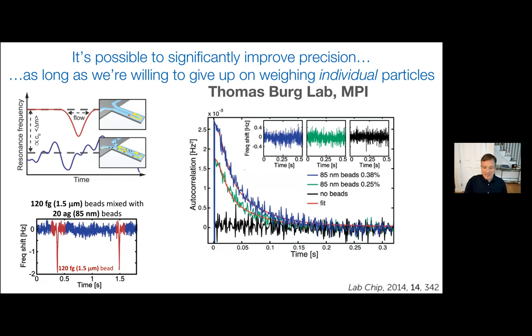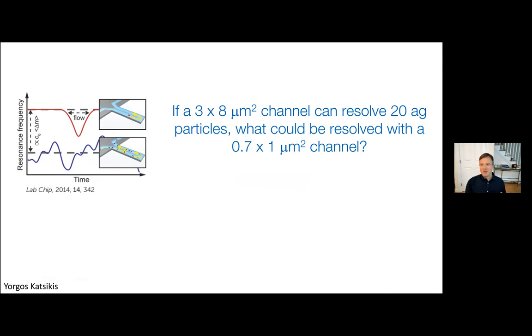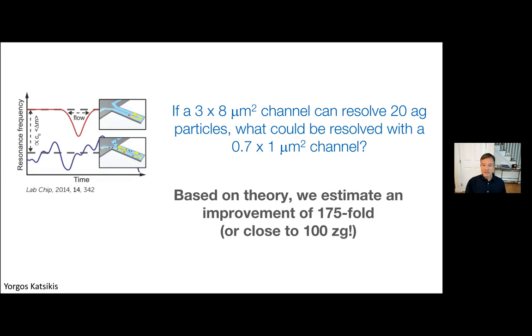He's really pushed limits down to measure particles that you wouldn't ordinarily be able to do in the standard mode. Let me point out Tomas's channels are 3 by 8 micron in cross section. So the question we've been thinking about is: if a 3 by 8 micron channel can resolve these 20 attogram particles, what could we do if we scale this down to our smaller channels? This is something Yorgos has been thinking about and working on. He's done a lot of theory and modeling to look at the scaling. What Yorgos came up with is that from the scaling down to the side, we ought to be able to see 175 fold improvement in the resolution. If we divide that by where we are, that puts us close to 100 zeptograms. This is a very conservative estimate, not a theoretical limit. That ought to be enough because the difference we're looking at is one attogram.